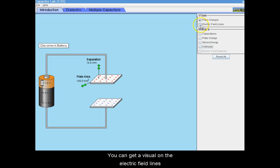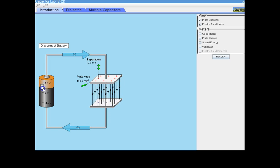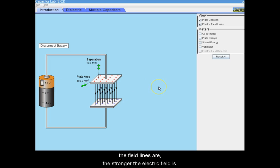You can get a visual on the electric field lines by clicking the checkbox. Remember, the more dense the field lines are, the stronger the electric field is.